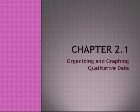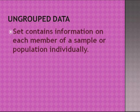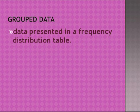Chapter 2.1: Organizing and Graphing Qualitative Data. Raw data is data recorded in the sequence in which it was collected, before being processed or ranked. Ungrouped data contains information on each member of a sample or population individually. Grouped data is data presented in a frequency distribution table.